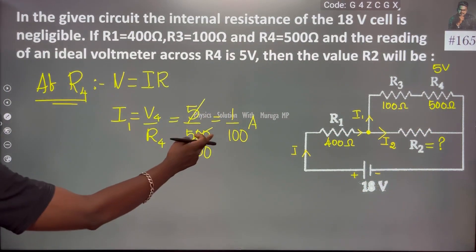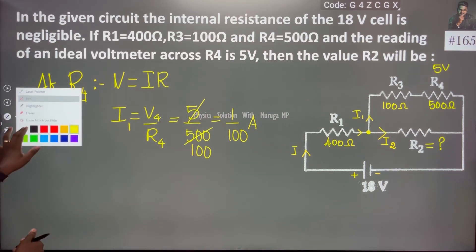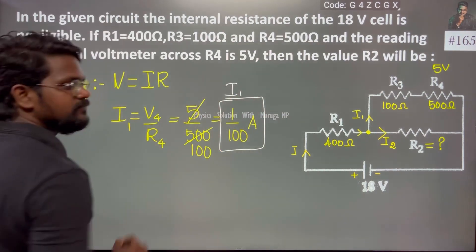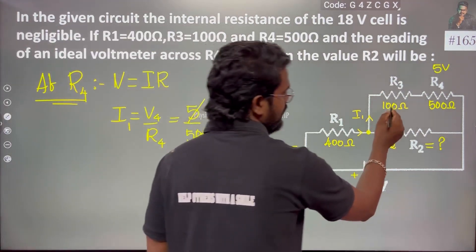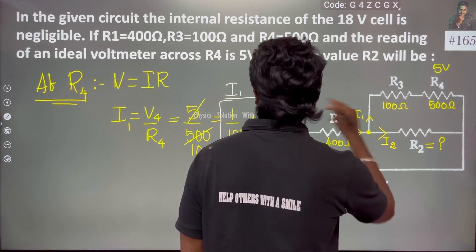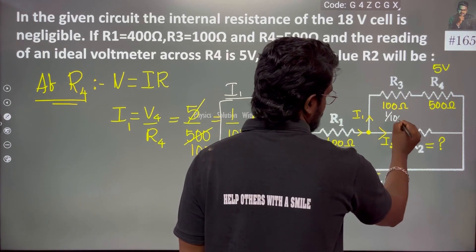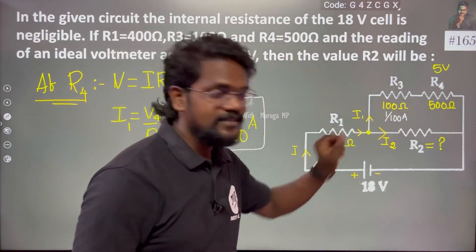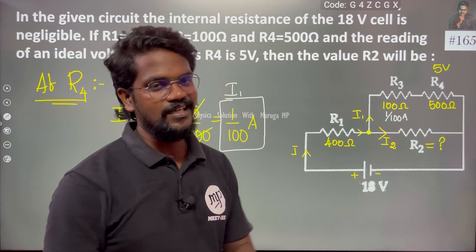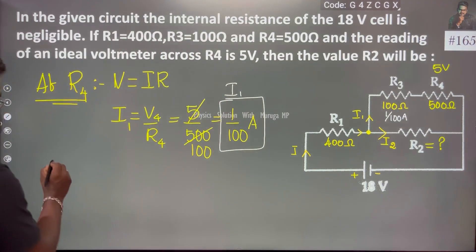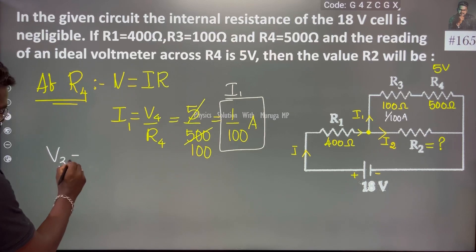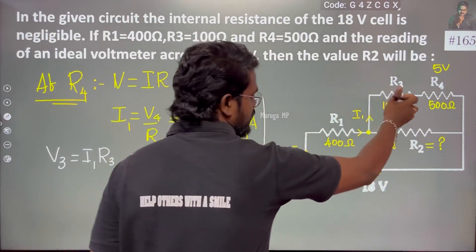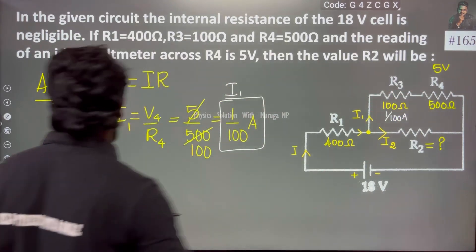I1 is the current through the series branch. We can say that V3 equals I1 times R3 — the current in that branch multiplied by the R3 resistance.